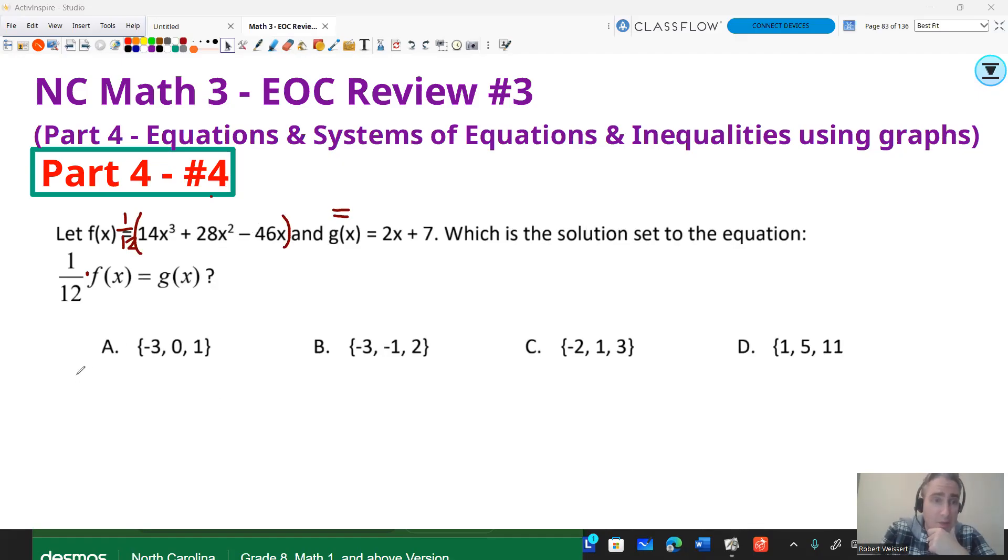These are all x values. So when you see a squiggly bracket, this is an x, x, x, x. These are just like all the x values from the order of smallest to largest. So let's go ahead and graph that.